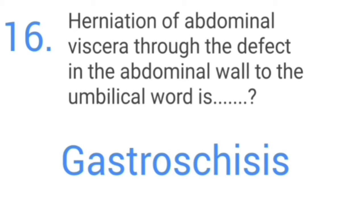Herniation of abdominal viscera through the defect in the abdominal wall to the umbilical cord is called gastroschisis.